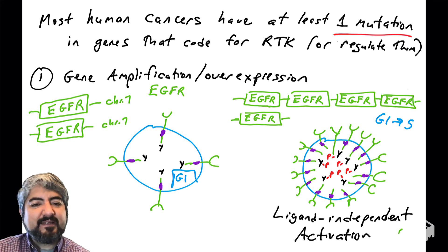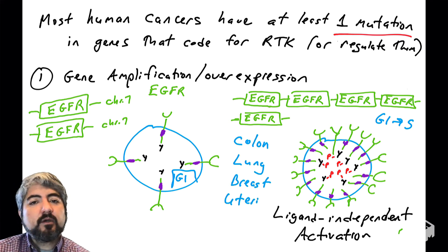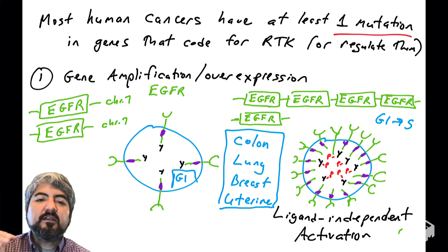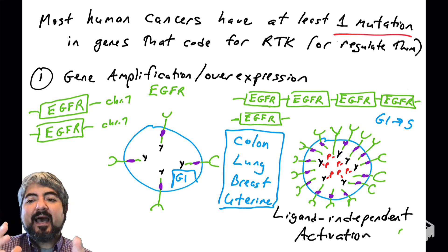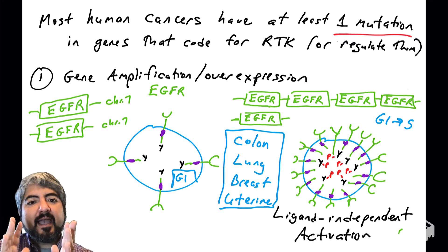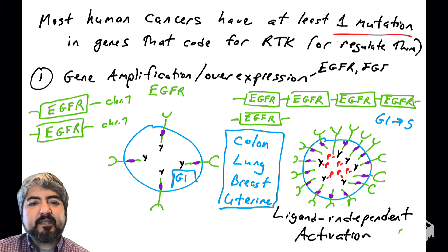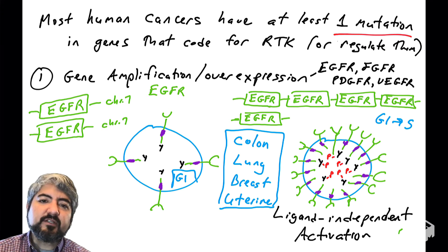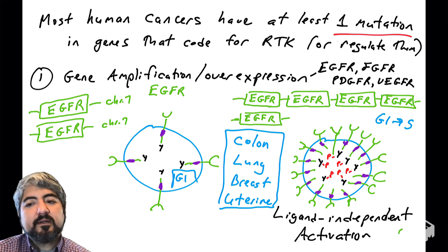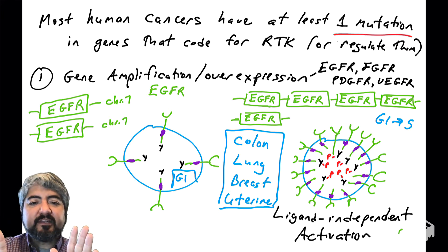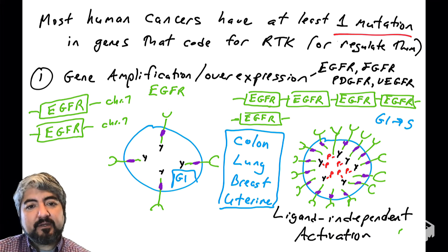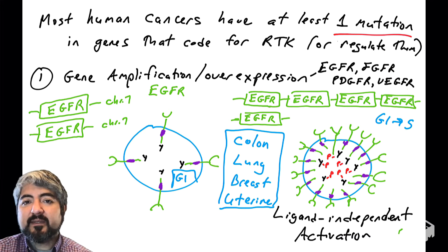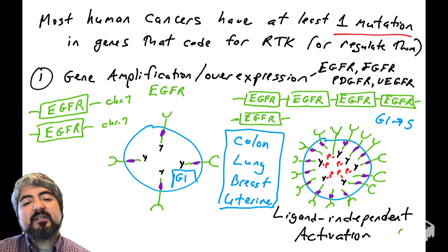This is known as ligand-independent activation, and this is seen in a number of human cancers — some colon cancers, some lung cancers, some uterine, some breast cancers. The gene for a receptor tyrosine kinase is amplified, and the high level of the protein is triggering ligand-independent activation. This example was for EGFR, but there are other human cancers driven by amplifications of FGFR, PDGFR, or VEGFR. Having too many growth factor receptors on the surface of the cell can trigger abnormal activation, leading the cell to go from G1 to S phase.